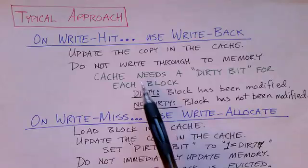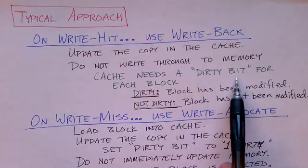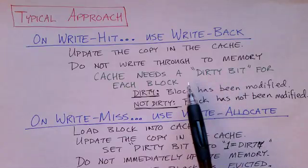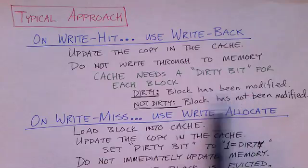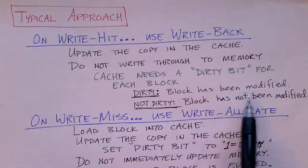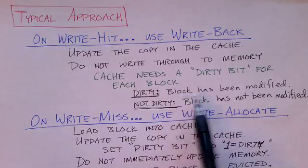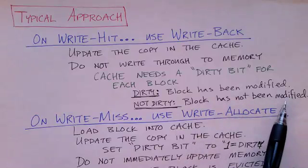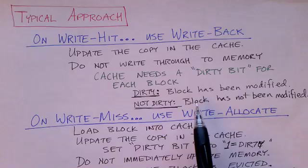So the cache maintains what's called a dirty bit for each block — a one-bit flag associated with each block in the cache. If the dirty bit is one, it indicates the block is dirty, meaning it's been modified and there's been a write to some byte within the block — it has to be written back to main memory. If the dirty bit is zero, the block has not been modified and does not need to be written back, saving the time that would be wasted writing it back to memory.